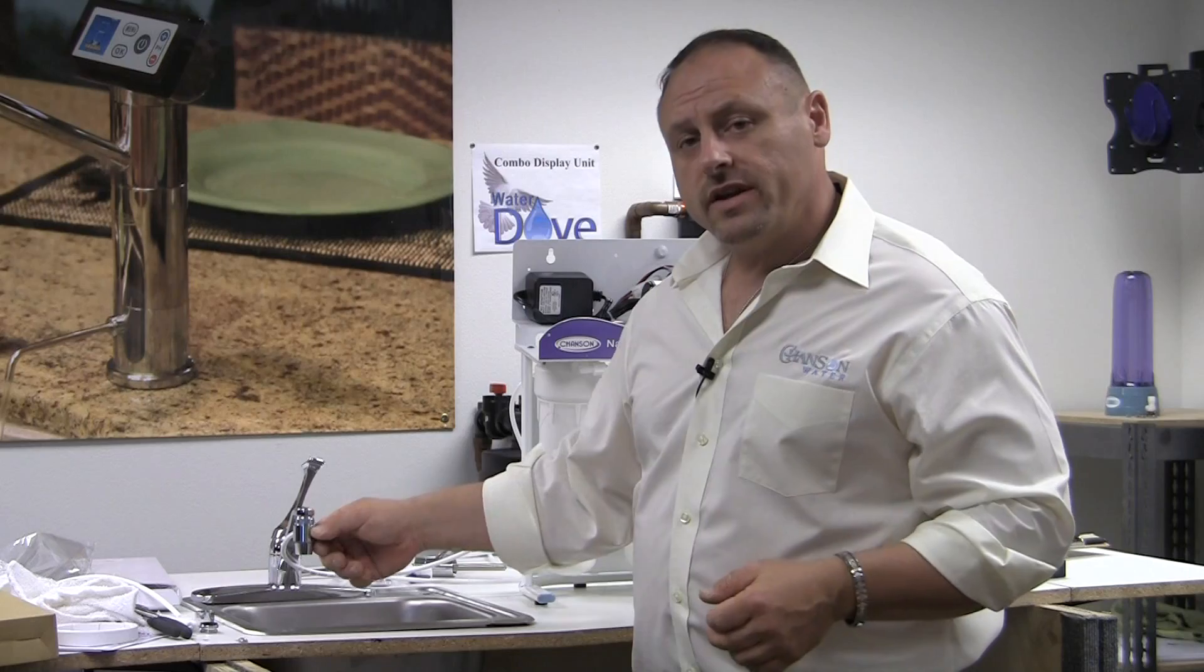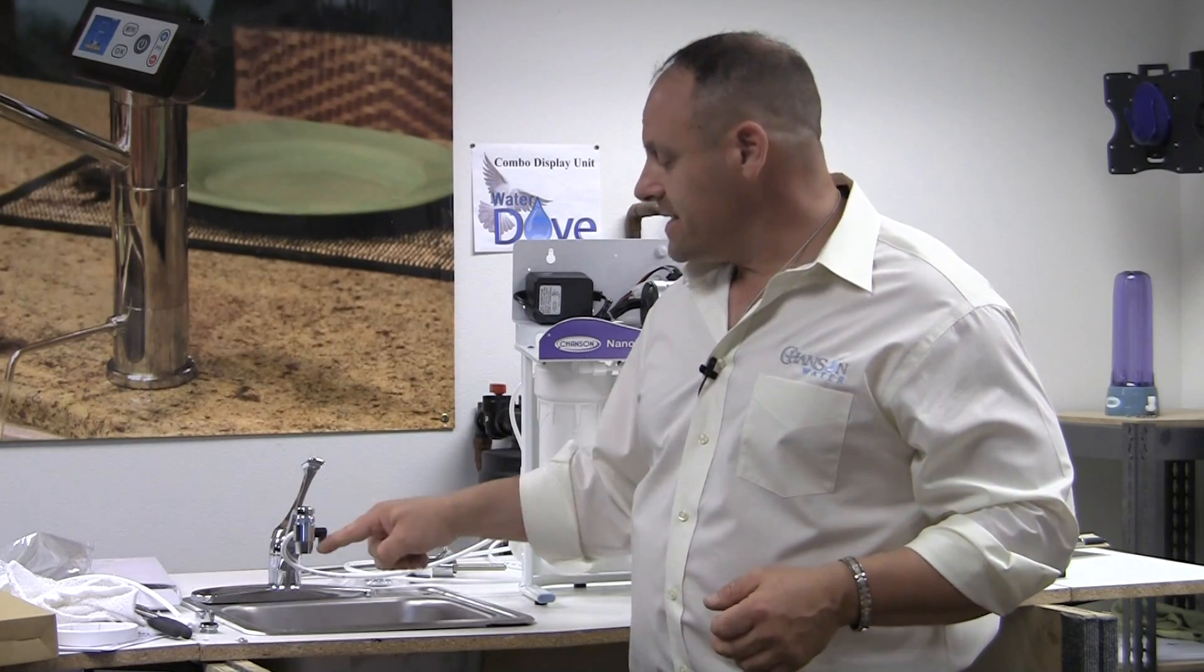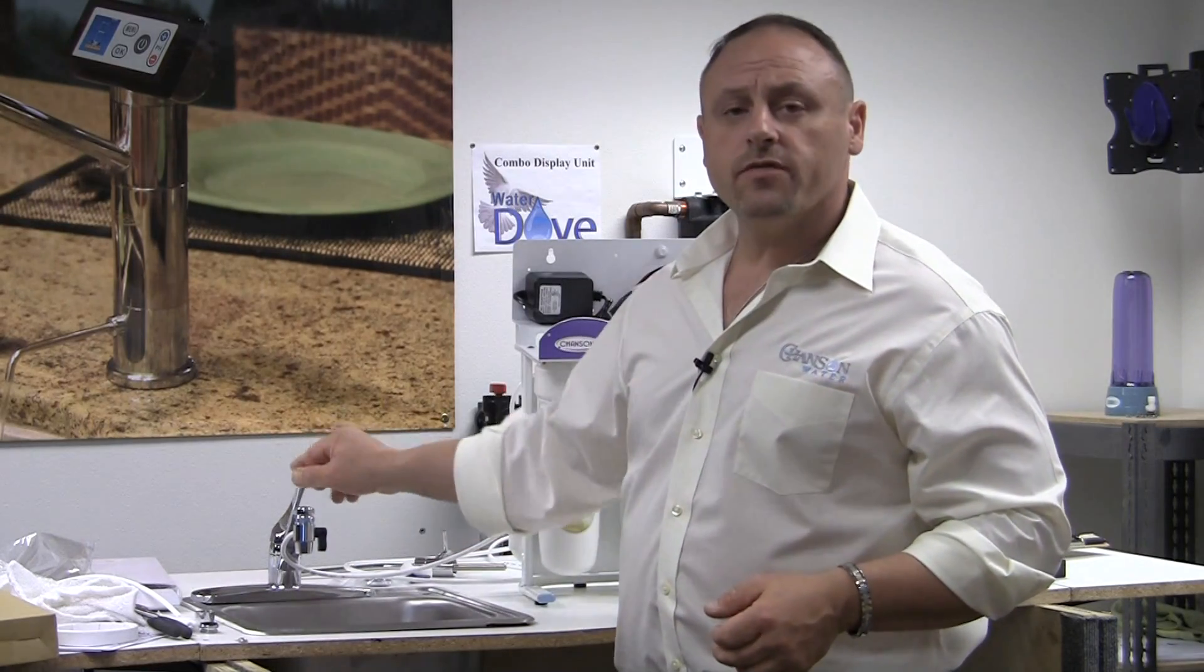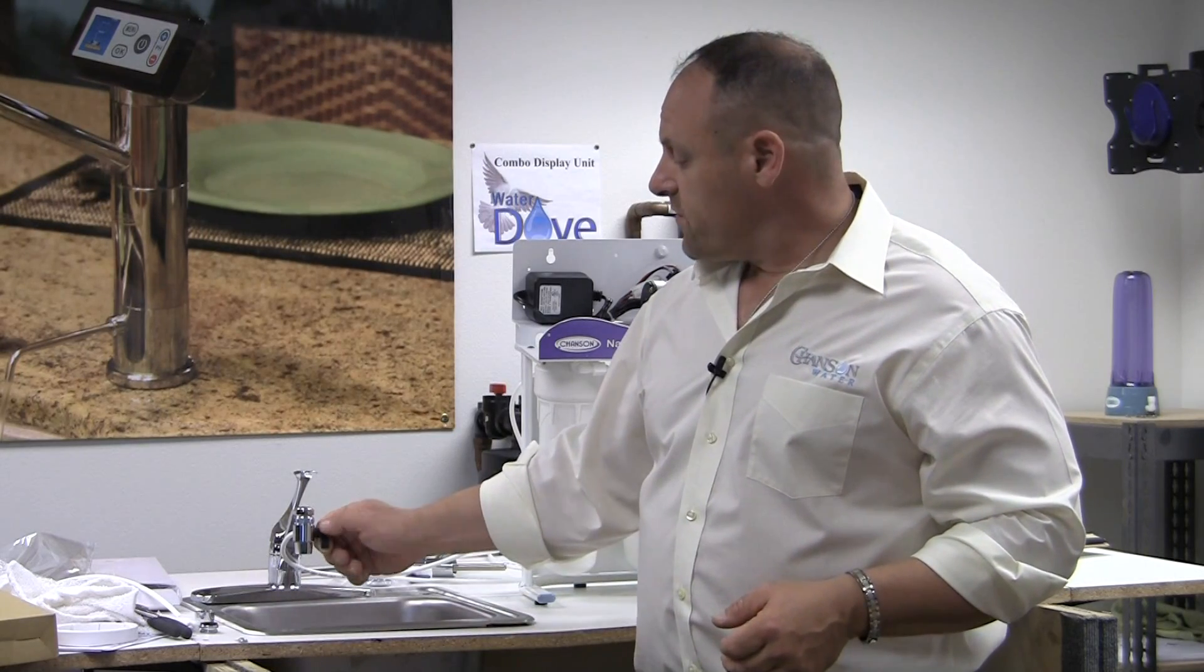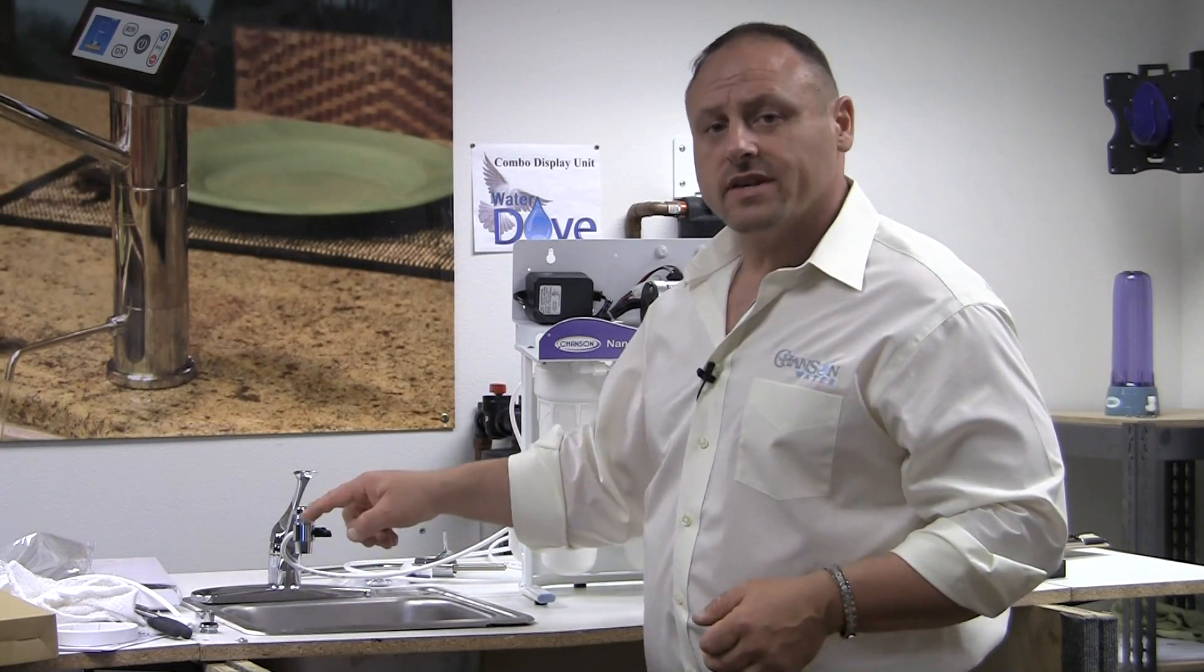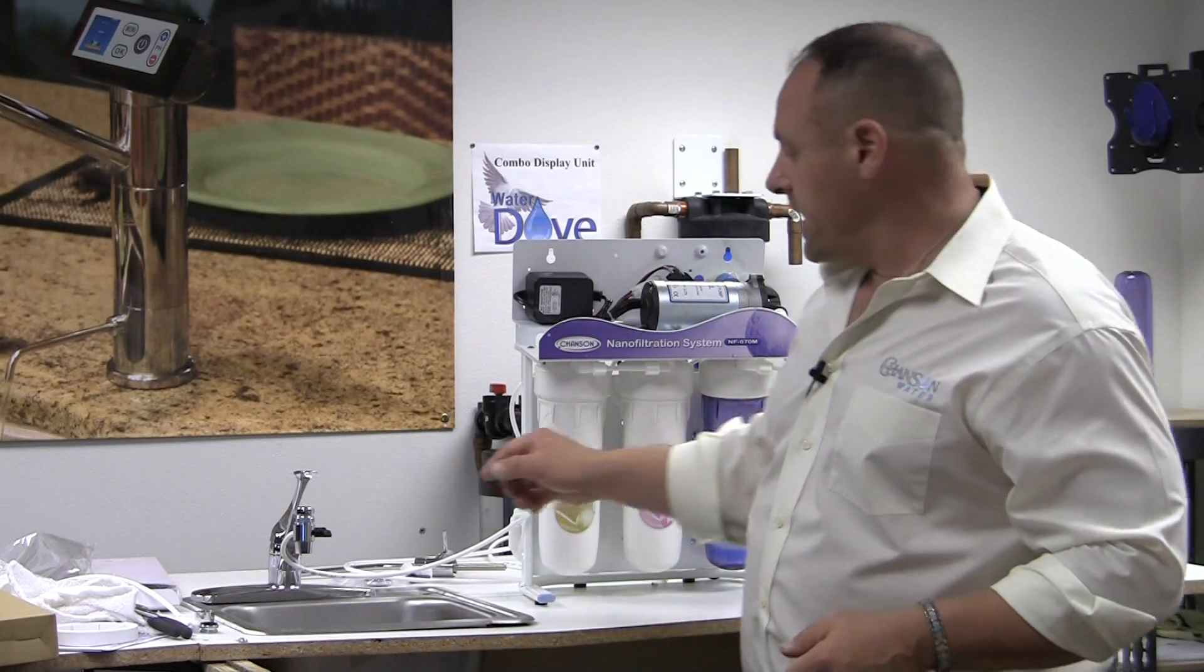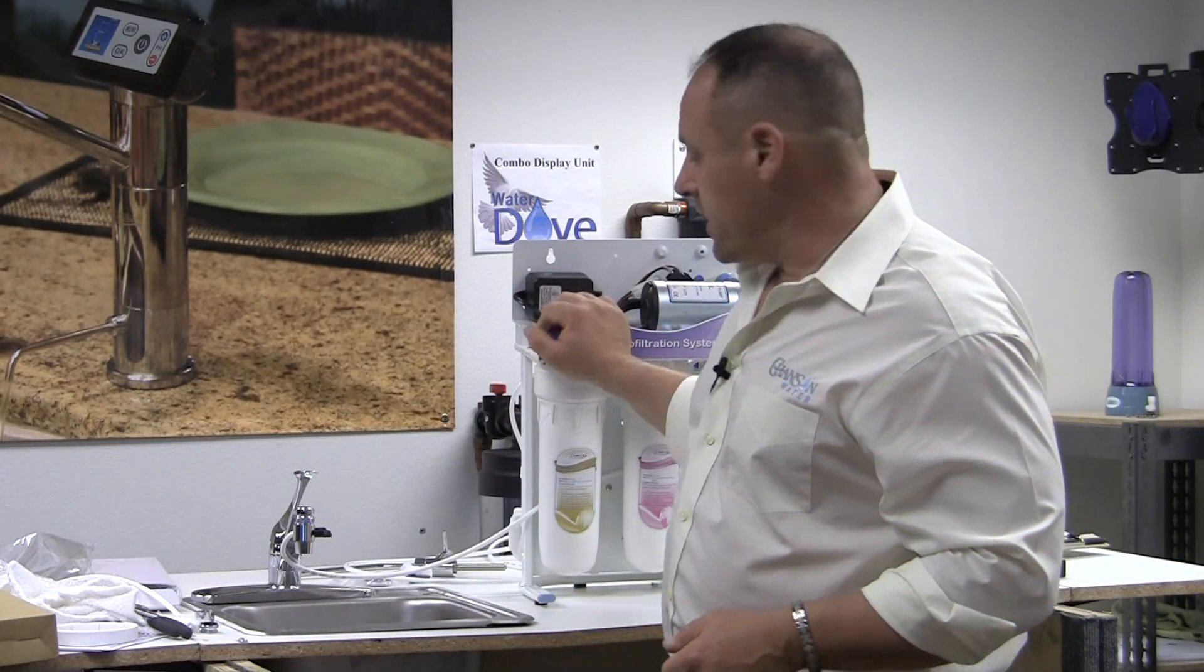The black lever here on the tip, when it's facing downwards, you can use your faucet as normal and water will come straight down. When it's facing upwards, it's going to send the water over to your ionizer, over to your nano filter. I'm sorry.